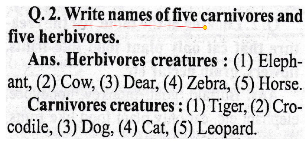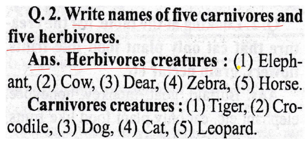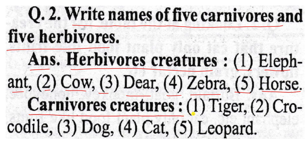Write the names of five carnivorous and five herbivorous creatures. Herbivorous creatures: one — elephant, two — buffalo, three — deer, four — zebra, five — horse. Carnivorous creatures: one — tiger, two — crocodile, three — dog, four — cat, five — leopard.